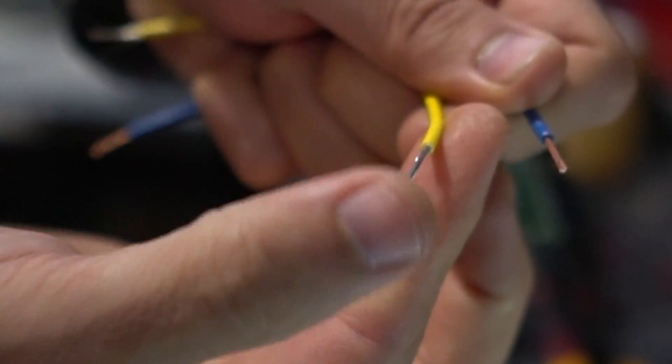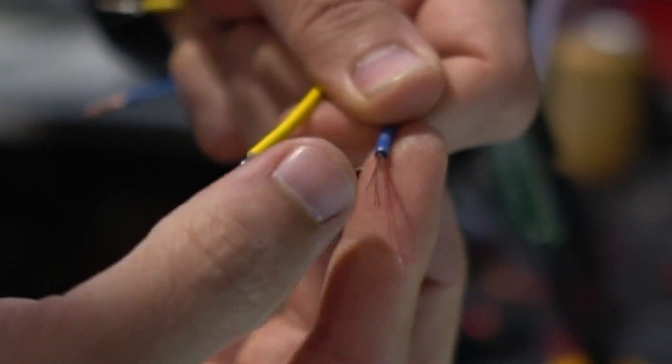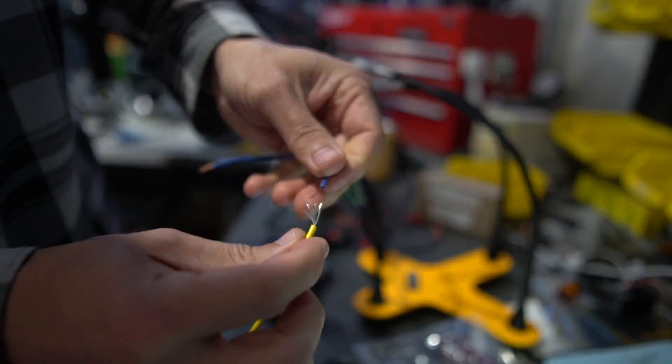We're going to strip the ends of these. Then we're going to fan out just the wires a little bit so that we can make a mechanical connection between them before we add our special connector that I'm going to add next.